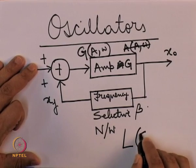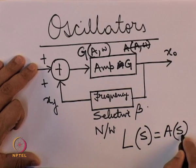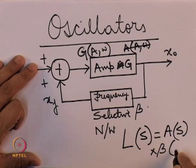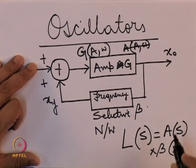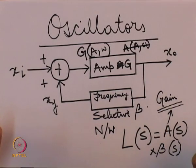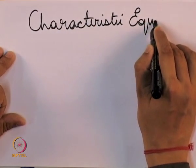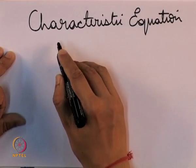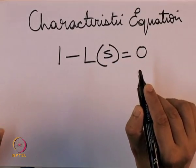The loop gain, recall, was the product of the forward path gain and the feedback gain. Here I am reverting to a as the terminology for gain since that is easier to understand while doing the derivations. The characteristic equation for this system is given by the denominator polynomial of the transfer function, and for positive feedback the characteristic equation is given as we had seen earlier.